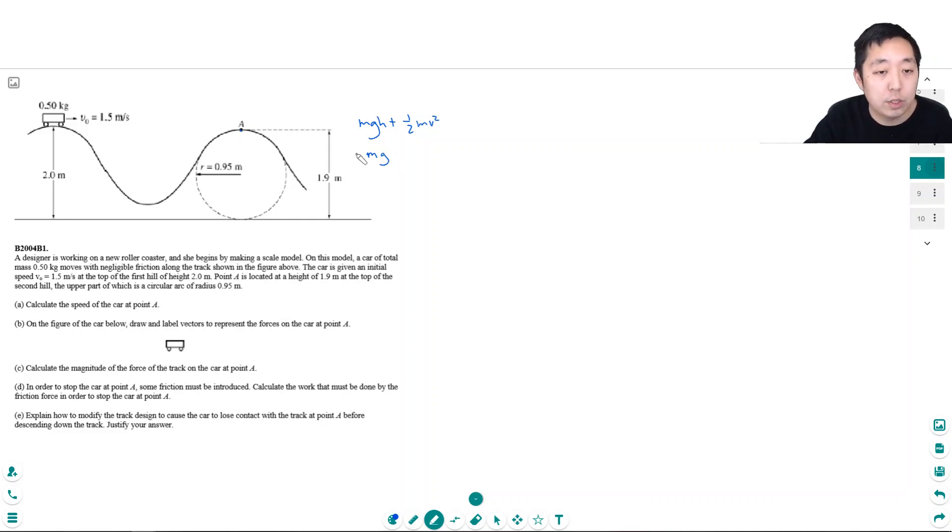The g is 9.8. The h is 2 meters here, so this is 2 meters plus one half m v squared is v0 squared, so 1.5 meters per second squared.